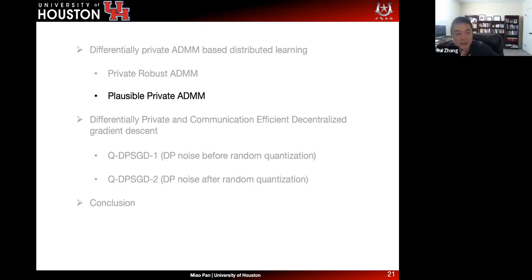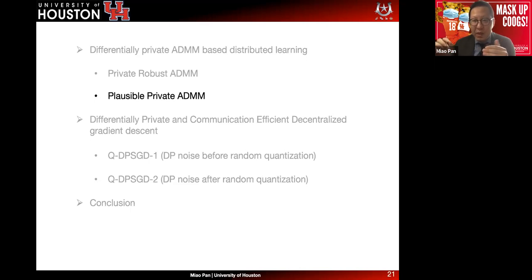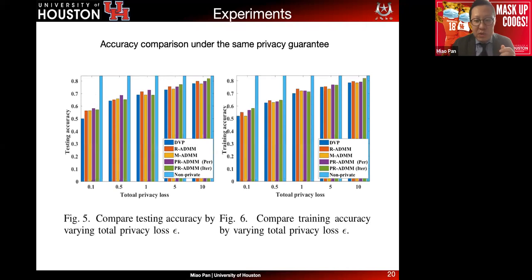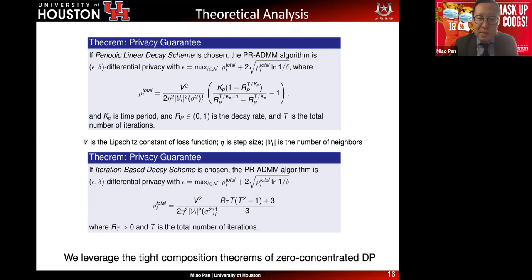A question was raised about what the privacy guarantee covers — is it per iteration or overall? It's over T total iterations. T can be predefined, for example T=1,000 or 10,000. After T iterations, the system satisfies the epsilon-delta DP guarantee. That is why we use the composition theory of ZCDP — you can add up each iteration's epsilon to the total after T iterations.